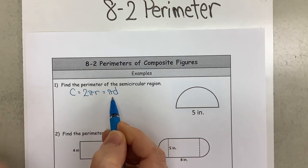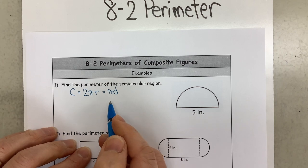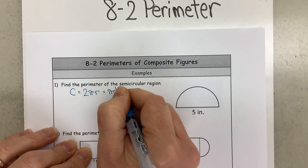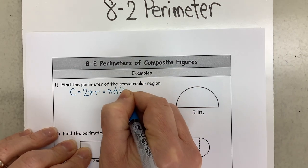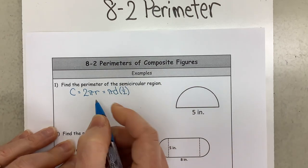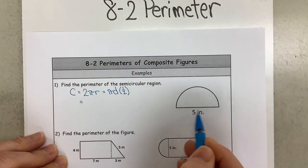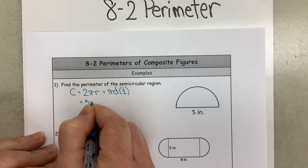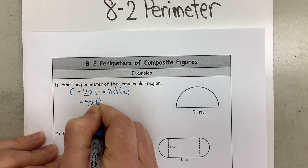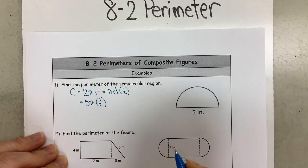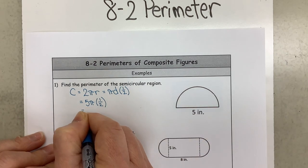So we can use this but we are going to have to cut this in half. Okay, so we're going to multiply by a half. So when I do this I know my diameter, so we're going to go ahead and say 5π but we're going to remember that it still has to be cut in half.